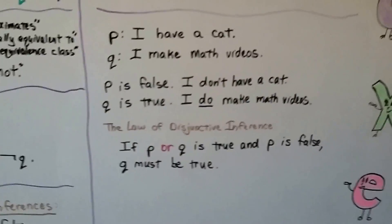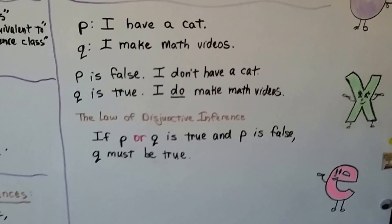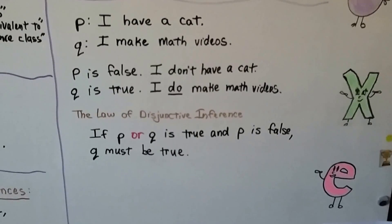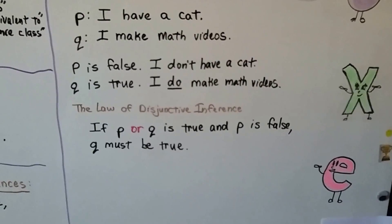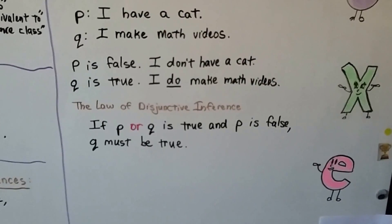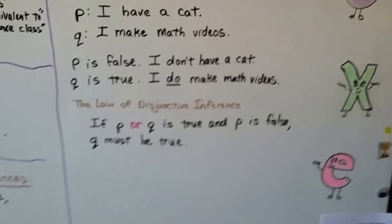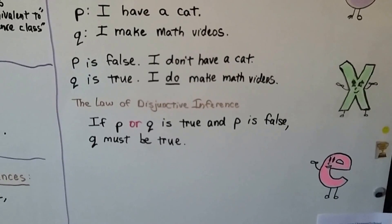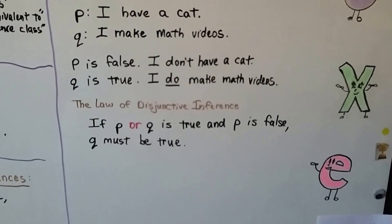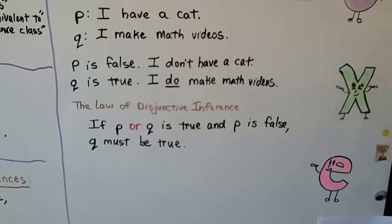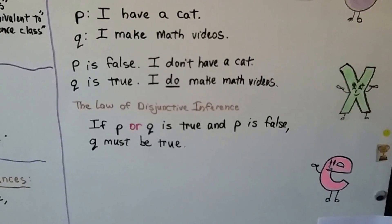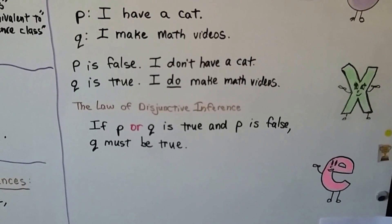So here we have P, I have a cat. That's false. I don't have a cat, I have two dogs. Q is I make math videos. Well, that's true. So P is false, I don't have a cat. Q is true, I DO make math videos. The Law of Disjunctive Inference says if P OR Q is true and P is false, then Q must be true. If I don't have a cat, P is false, then I must make math videos.